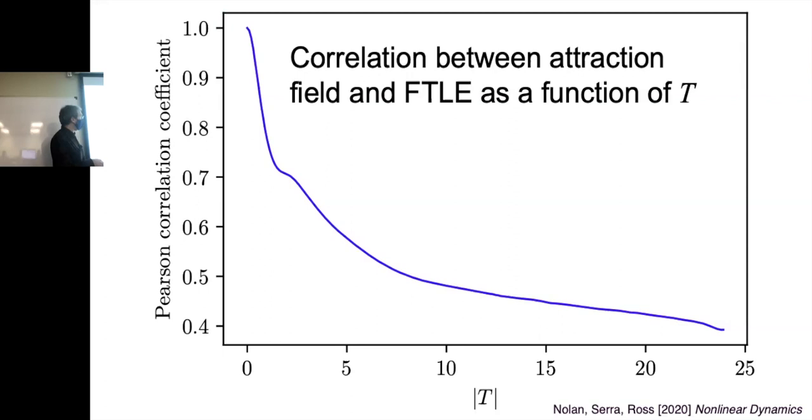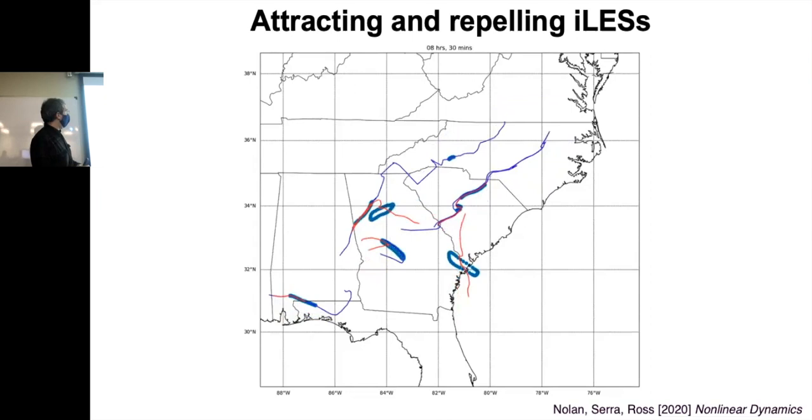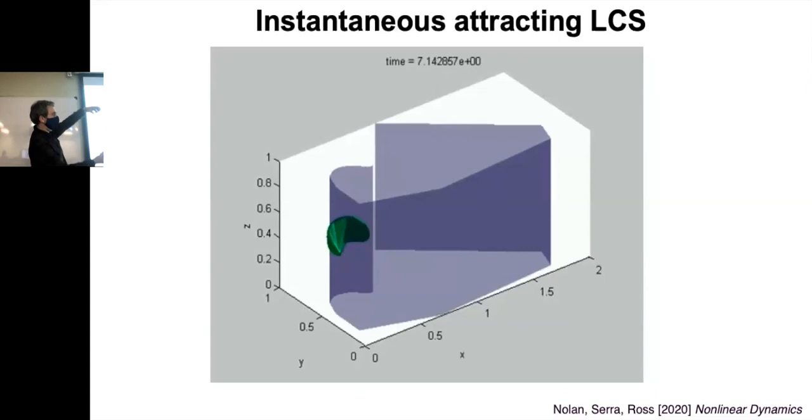One of the questions that always comes up when I talk about these methods is, how do you choose this time T? And I often say it depends on the application. It's just a parameter. But if you can look in the instantaneous limit, then we've removed one of the parameters. So these are some instantaneous attracting and repelling structures. Blue ones are the attracting, the red are repelling, and you can just see what they do. They do what we expect, looking at 2D surfaces in a 3D flow. So this is an attracting, instantaneous attracting LCS. This is basically a double gyre flow where we trivial third direction, and this is a repelling LCS. The blob stretches out away from it.